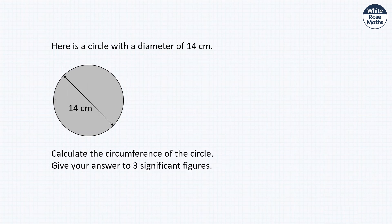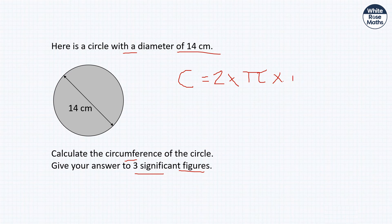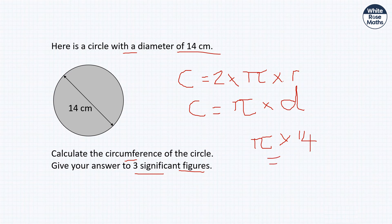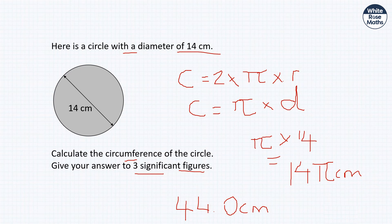Next: a circle with diameter 14 centimetres — calculate the circumference, give your answer to three significant figures. The formula for circumference is either 2πr or πd. Since the diameter is double the radius, it's π × 14 = 14π centimetres. Bringing that into the calculator gives 44.0 centimetres to three significant figures.